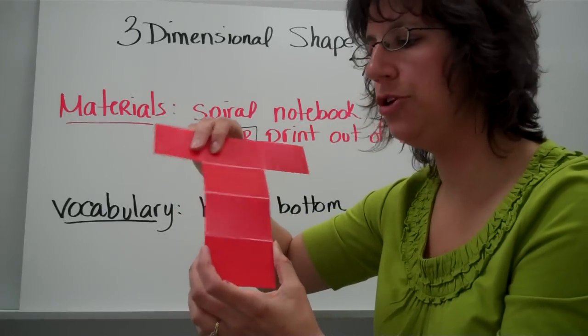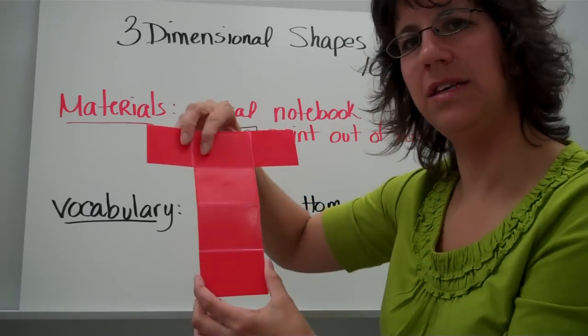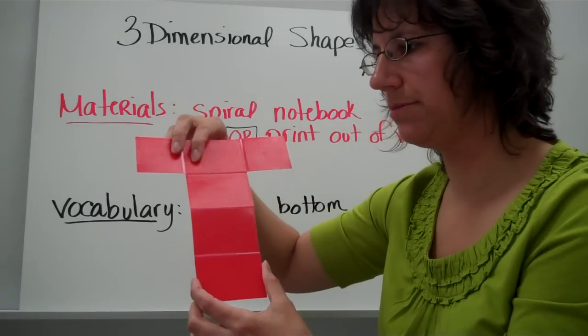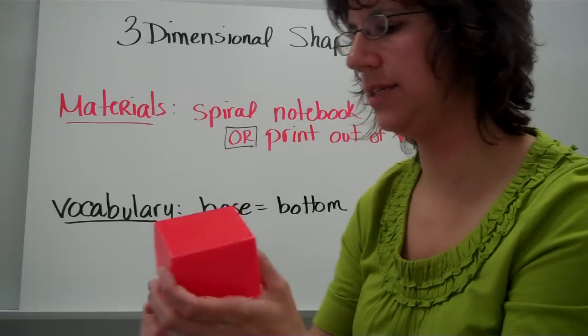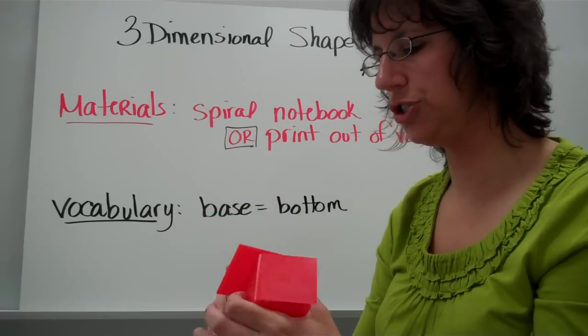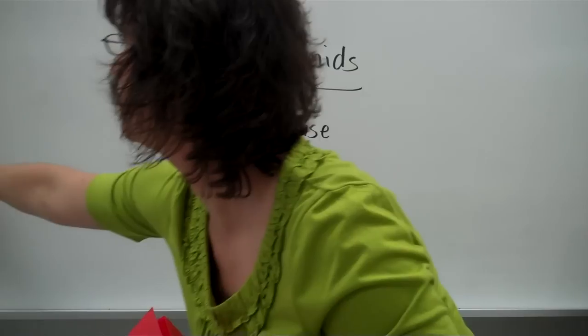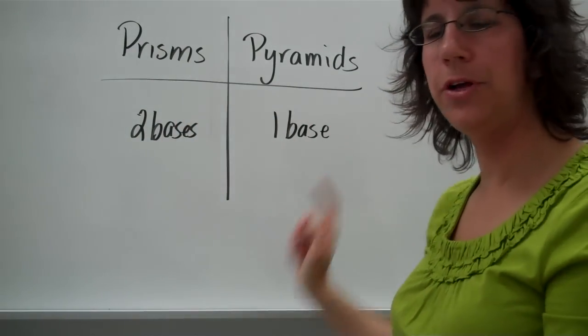You'll be doing that in class some, and you do need to become familiar with, if you look at this net, what shape would that make? Now, there are different kinds of three-dimensional shapes, and what I need you to become familiar with is the difference between a prism and a pyramid.